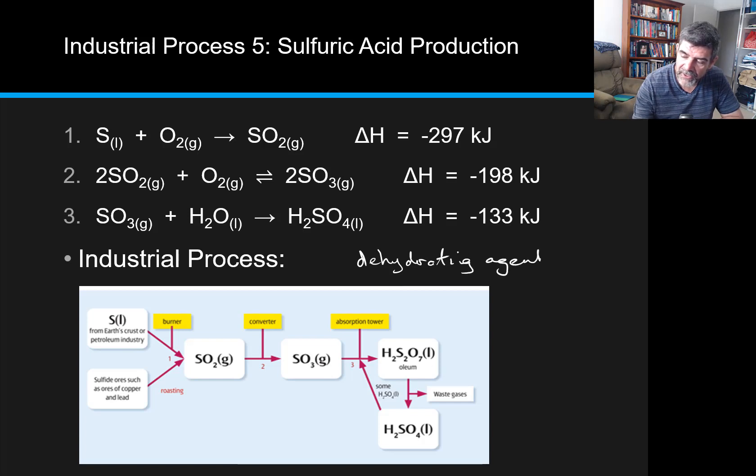So if we think about things like our esterification process, if we also think about the conversion between ethanol to ethene or ethene to ethanol, these both can use sulfuric acid as a catalyst for the reactions.